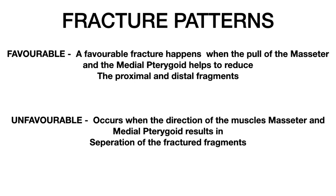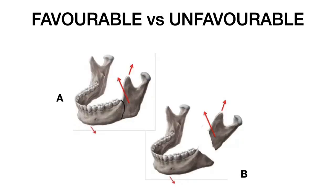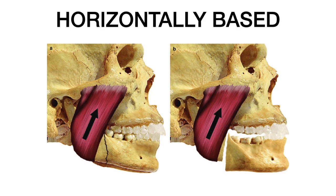Unfavorable fractures occur when the direction of the muscles — such as the masseter and medial pterygoid — results in the separation or movement of the fractured segments. In picture A, the proximal segment remains reduced compared to the distal fragment even though there is a fracture line. In picture B, the proximal fragment displaces superiorly with respect to the distal fragment, which is an example of an unfavorable fracture.